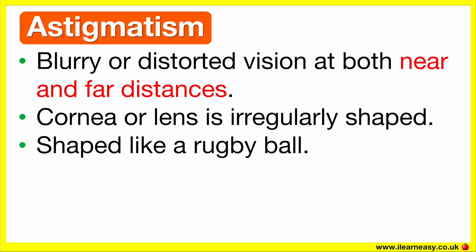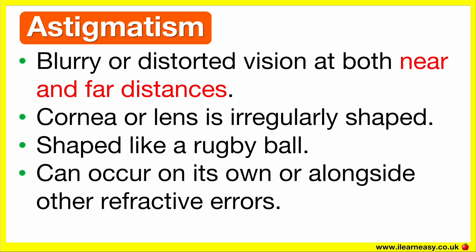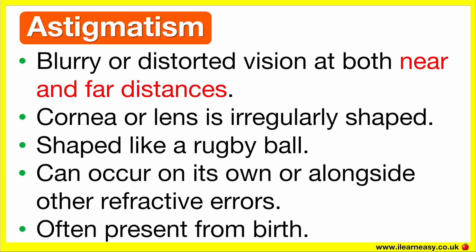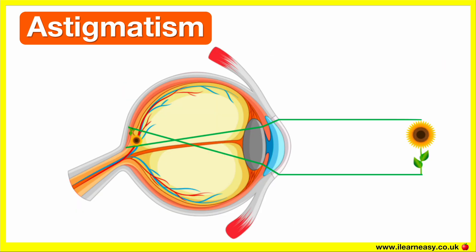This uneven shape bends light unevenly, leading to blurred vision. Astigmatism can occur on its own or alongside other refractive errors like myopia or hyperopia. It may be present from birth and can remain stable or change over time. With astigmatism, light focuses on multiple points, either in front of or behind the retina.